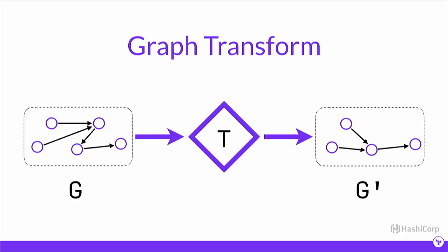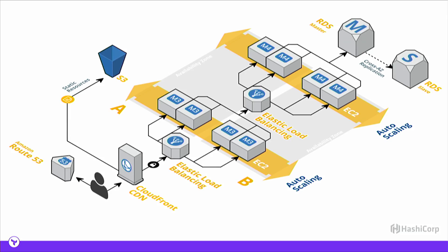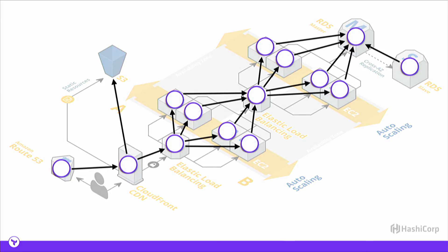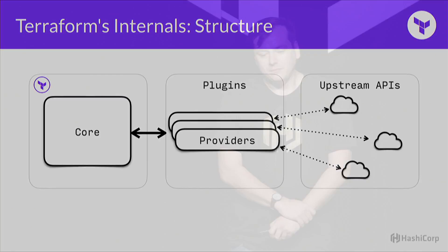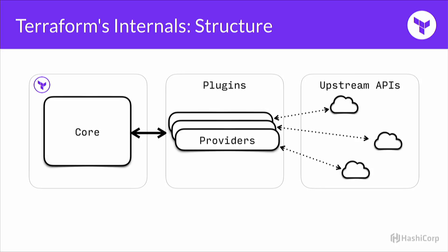So that's it — just a couple of minutes, a couple of examples. It's pretty easy to see, going back to this picture, why graph theory might be valuable here. Modeling infrastructure as a graph turns out to give us a ton of benefits. That's where Terraform comes in — this is Terraform's reason for being. We're going to make our way down to where the graph lives in Terraform's core, going down level by level until we get to the graph.